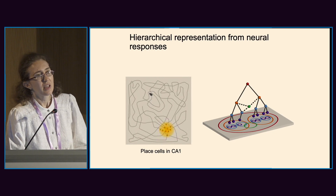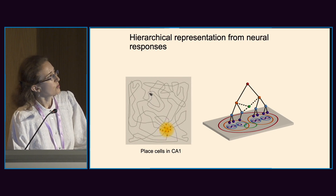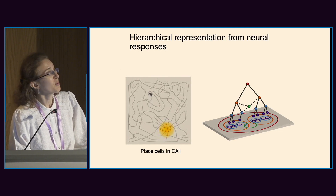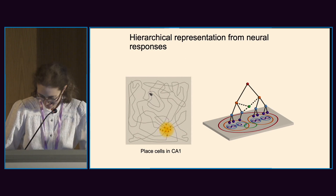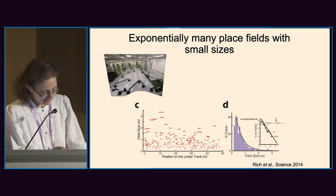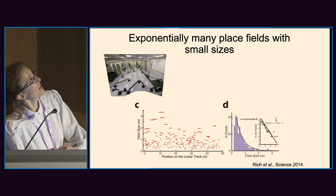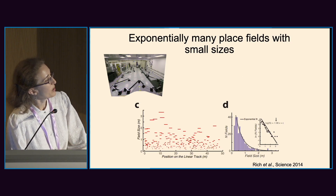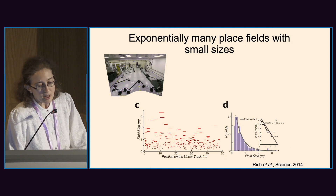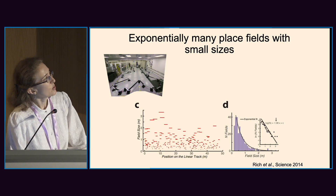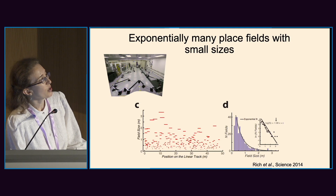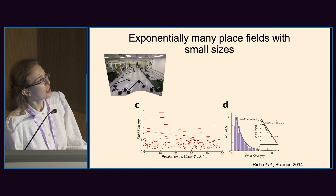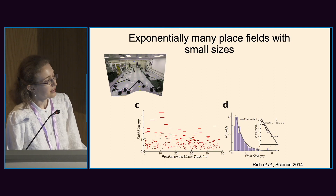If one place field is completely within another you draw a solid line, and if they partially overlap you draw a dashed line. This technique was purportedly used to reconstruct the tree of life. We analyzed data from Albert Lee's group at Janelia, who are interested in very large environments. This is at a very large scale — about 50 meters — and you get large place fields and tiny place fields. One signature of hyperbolic geometry is an exponential increase in the number of small place fields, and indeed when you plot the number of place fields as a function of size you get an exponential distribution, which is what we observed.